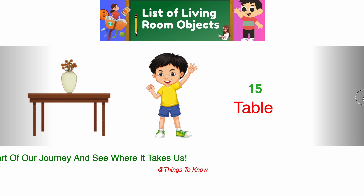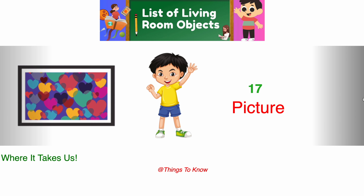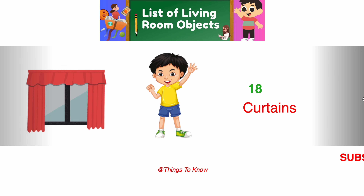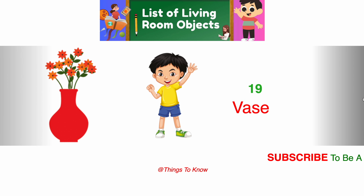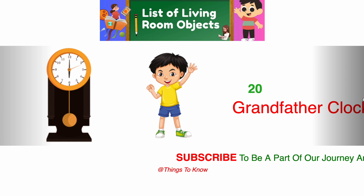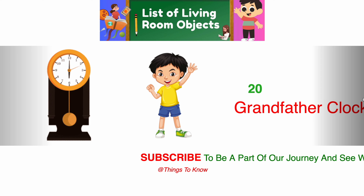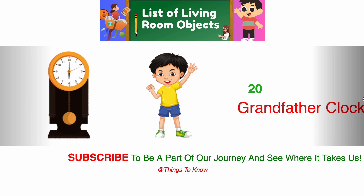Sixteen blinds, seventeen picture, eighteen curtains, nineteen drapes, and twenty grandfather clock. So these are common living room objects.